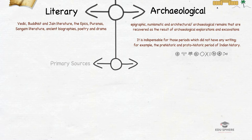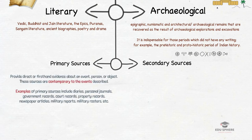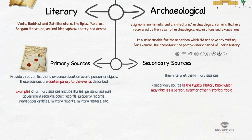We also have primary and secondary sources of history. Primary sources provide direct or first-hand evidence about an event, person or object — these sources are contemporary to the events and people described. Secondary sources provide second-hand information and commentary from researchers; they interpret the primary sources. A secondary source is the typical history book which may discuss a person, event or any other historical topic.